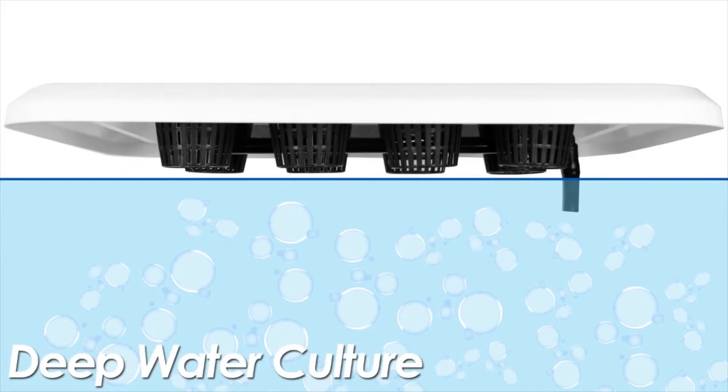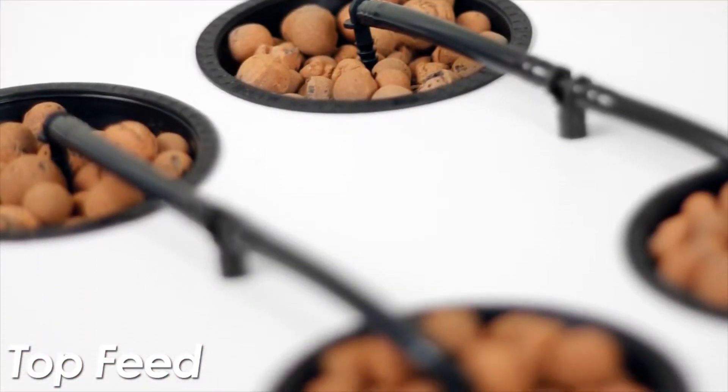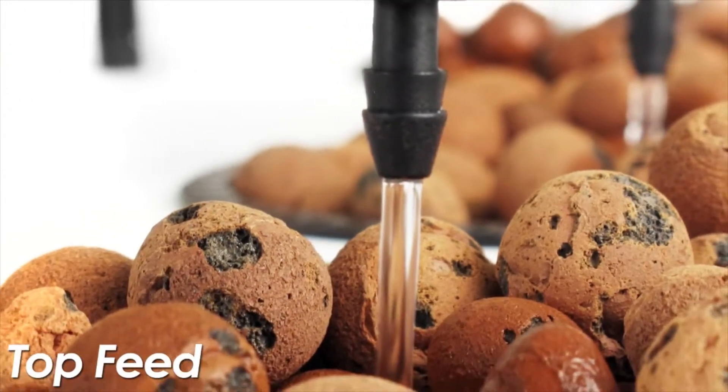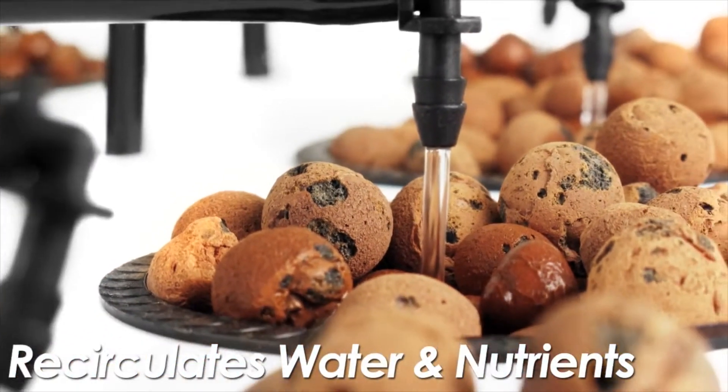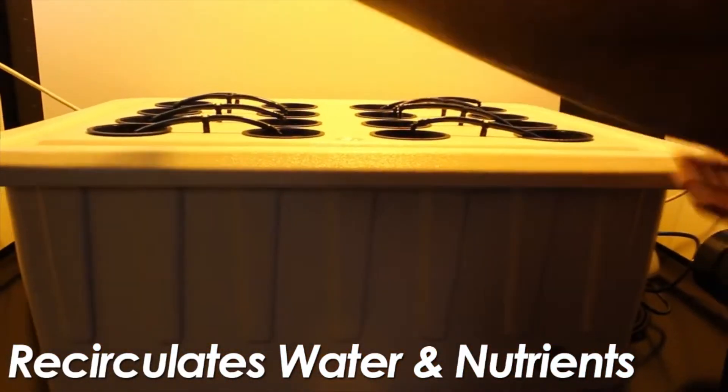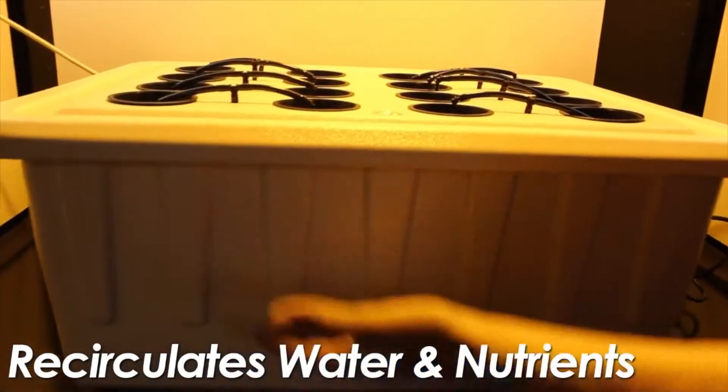But also, which is even more important, is the top feed. The top feed is essential to healthy plants and healthy roots because it brings water and nutrients that settle at the bottom of the reservoir, brings them up to the top, and recirculates them down throughout the plant. So it's continually getting a fresh set of nutrients and water the entire time.